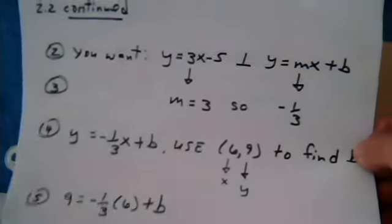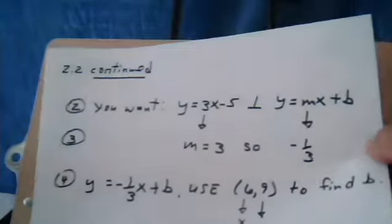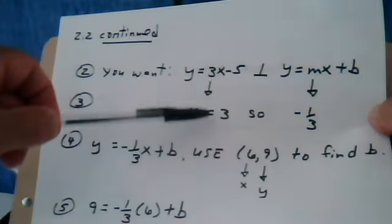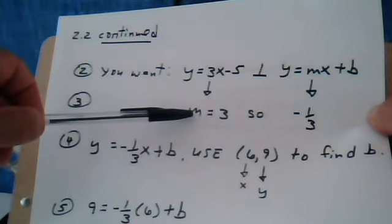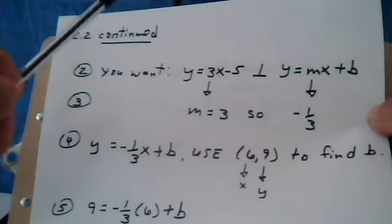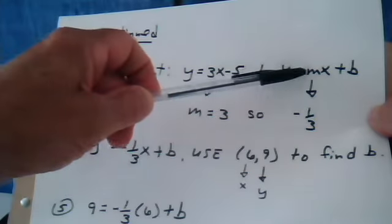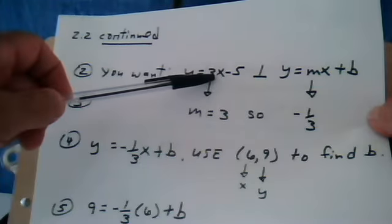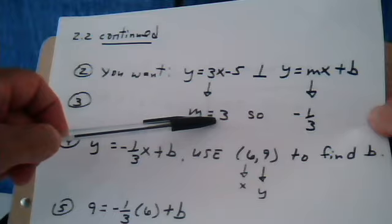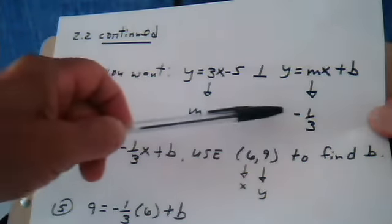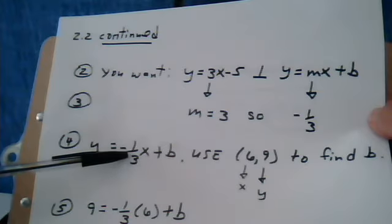Since we have the y all by itself, the slope is 3 for the line that they gave us. So m equals 3. m is the slope. And we need to come up with a line that's perpendicular to the given line. Since we already know the slope here, all we have to do is flip this number around, find the reciprocal, and change the sign, and then replace it for the m.